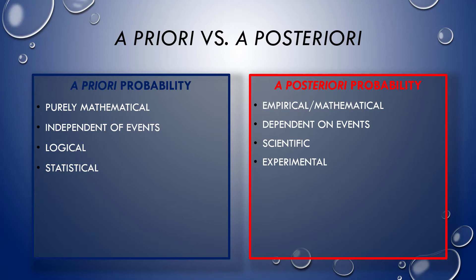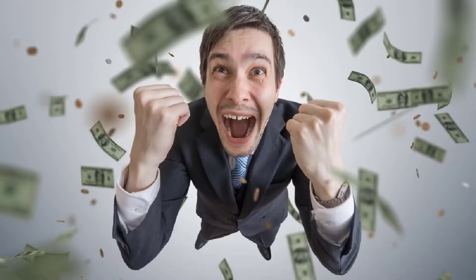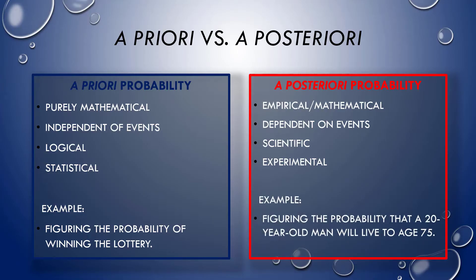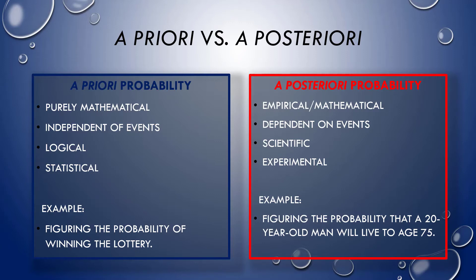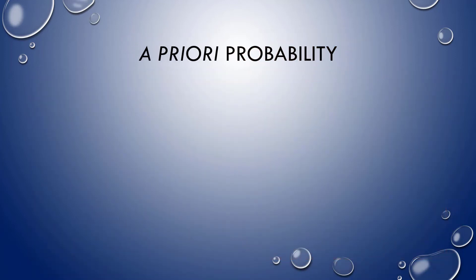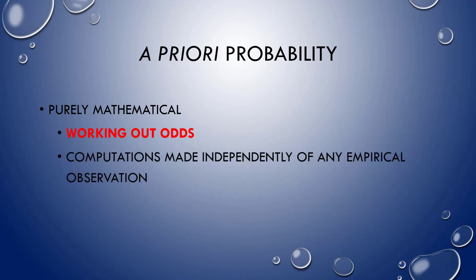I'll give an example of each to show the difference. So for a priori probability, maybe figuring the probability of winning the lottery, where for a posteriori probability, figuring the probability that a 20 year old man is going to live to the age of 75. The first we could figure without ever running the lottery, and the second has to follow the accumulation of lots of observational data. In this video, we're going to focus on a priori probability almost exclusively. And this kind is purely mathematical. It has to do with working out odds, and possible combinations. Degrees of probability that we can know by mathematical means alone. Computations that can be made independently of any empirical observation of actual events.